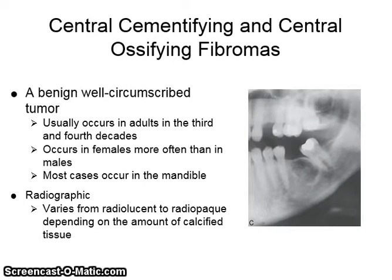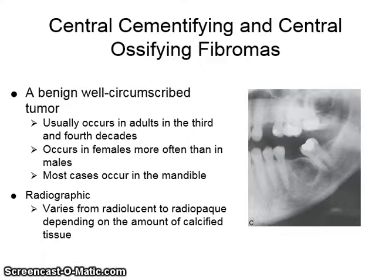The central cementifying and central ossifying fibromas are benign, well-circumscribed tumors. They usually occur in adults in the third and fourth decades, and in females more than in males, mostly in the mandible.